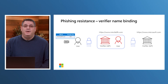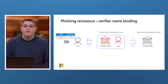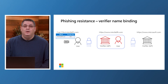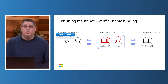The browser passes the authenticated verifier identifier — in our case, it is Microsoft.com with zero instead of O. This is passed via CTAP. The FIDO security key looks up an associated secret and can't find one. Hence, the authentication flow is blocked.